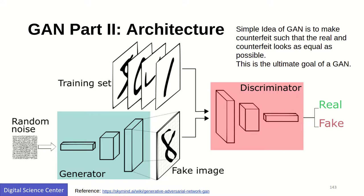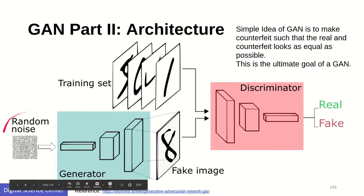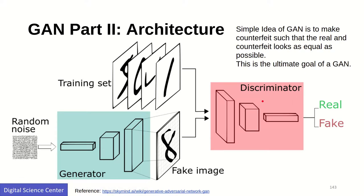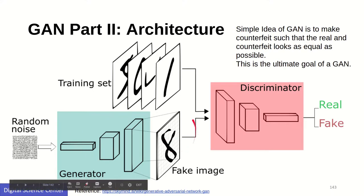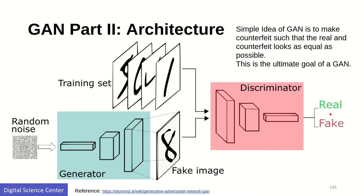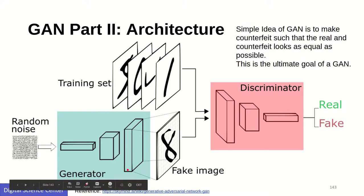The basic example is like there's a counterfeiter who's going to create fake outputs from the known input. Let's say you have random noise — the generator creates a fake image out of it. The discriminator is trying to understand whether this is fake or real, and it tells the generator whether the result is close enough to a real one or is a fake one, giving feedback to the generator.